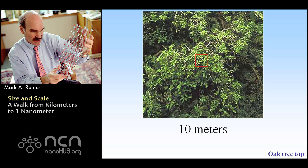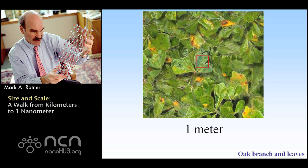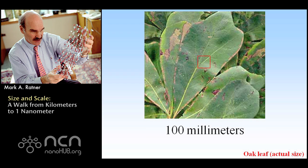Down to 10 meters, we're at the top of an oak tree. Down to one meter, we're in an oak tree. These oaks look a little different from the oaks in Illinois where I live, but they are oaks nevertheless. Go down to a hundred millimeters, which is 10 centimeters — about four inches — and we're on top of an oak leaf.